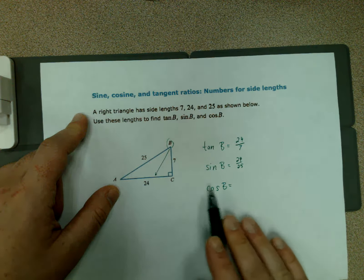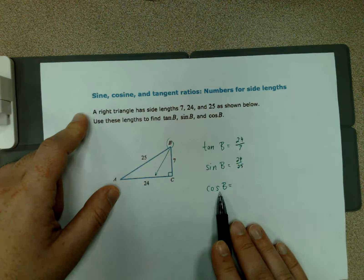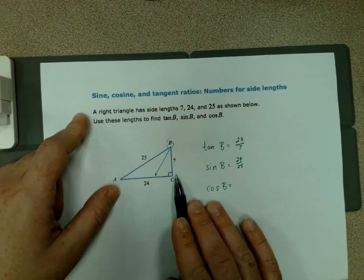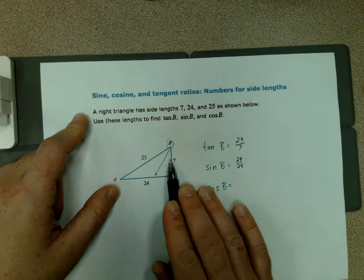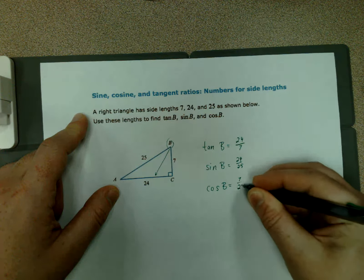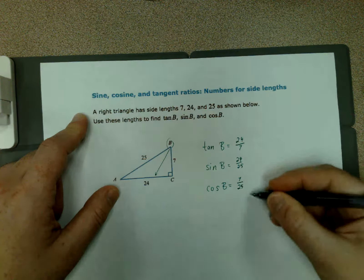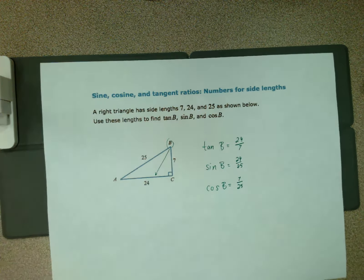Cosine of B is adjacent over hypotenuse. Our adjacent side is 7, so that'll be over 25 again—7 over 25. Glancing back, none of those reduce, so we're done.